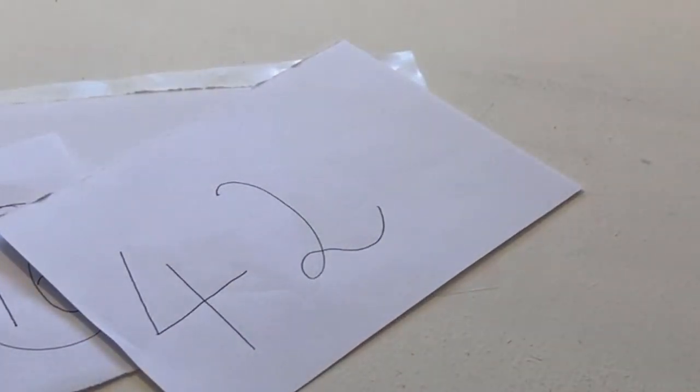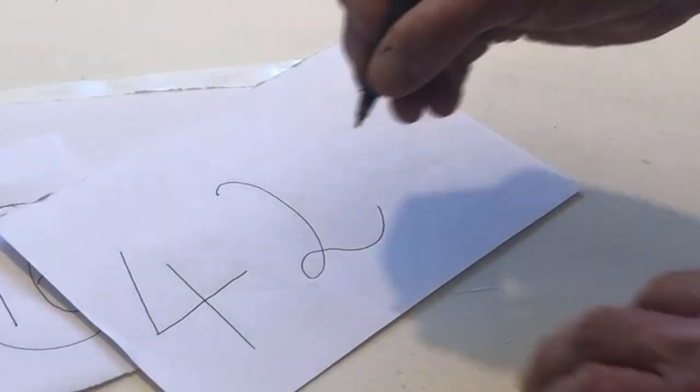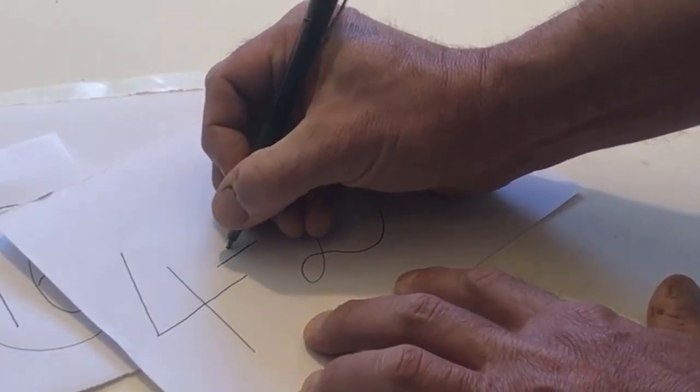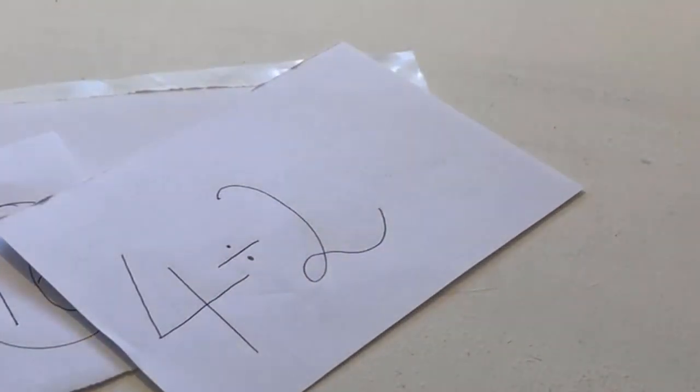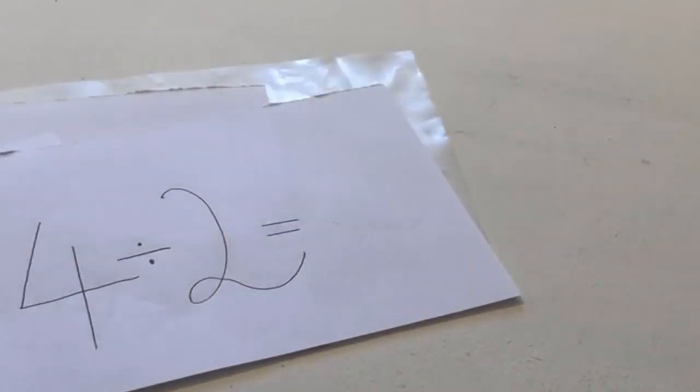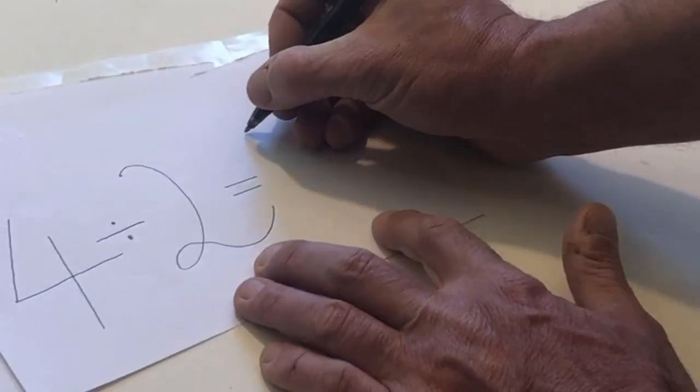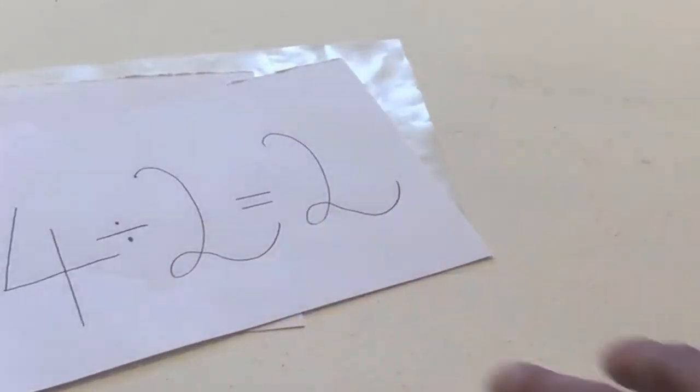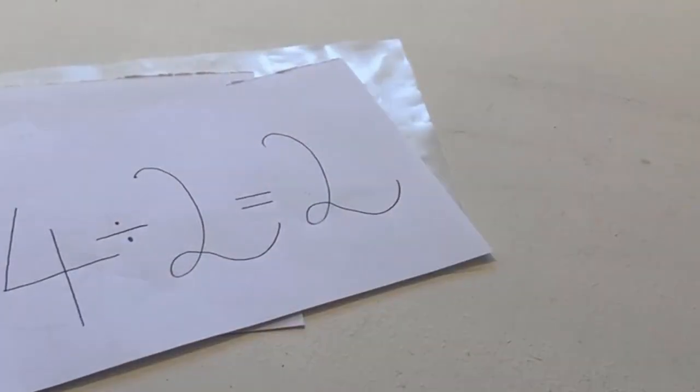In between the 4 and the 2, write the division sign. To the right of the number 2, write the equals sign. Write your answer after the equals sign. Draw a square around the answer.